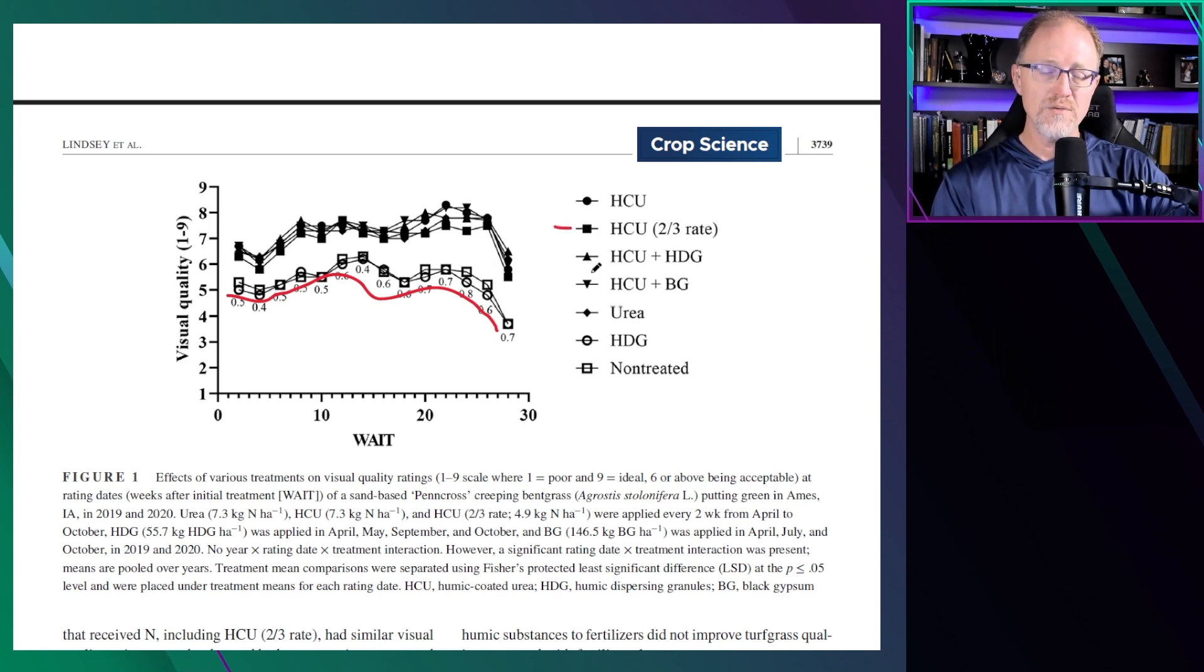This two-thirds rate humic-coated urea also was in this group as well. But we can't say that you can reduce the rate to two-thirds the rate of nitrogen because all the two-thirds rate was equal to all the regular full rate of nitrogen. But we can't say that was from the humic part of this product because there was not a two-thirds rate of urea control to counteract that.